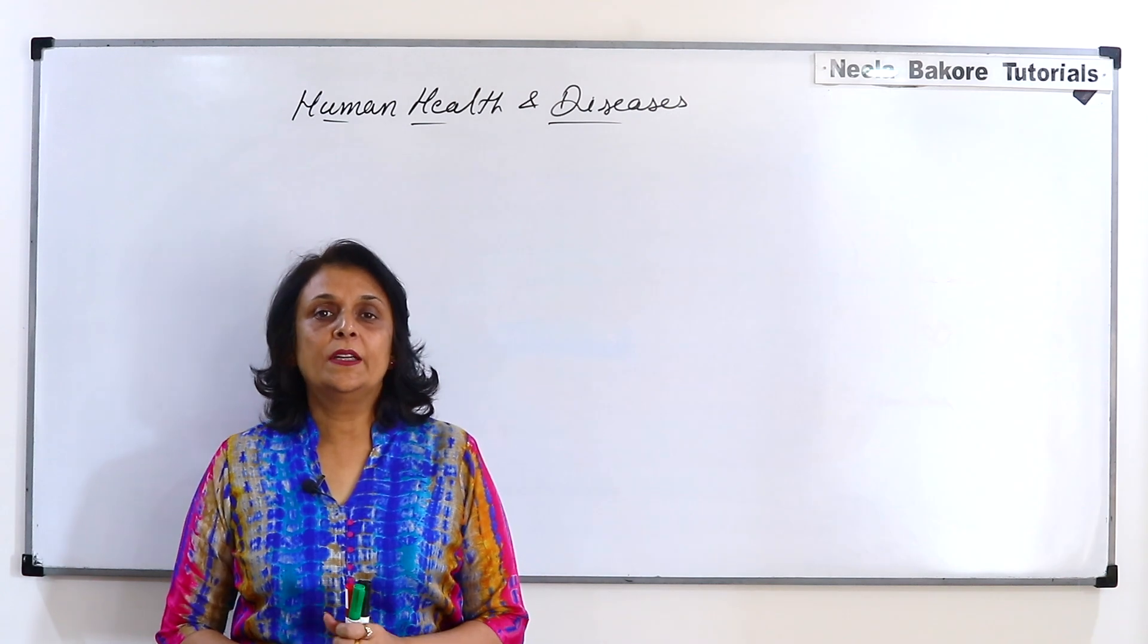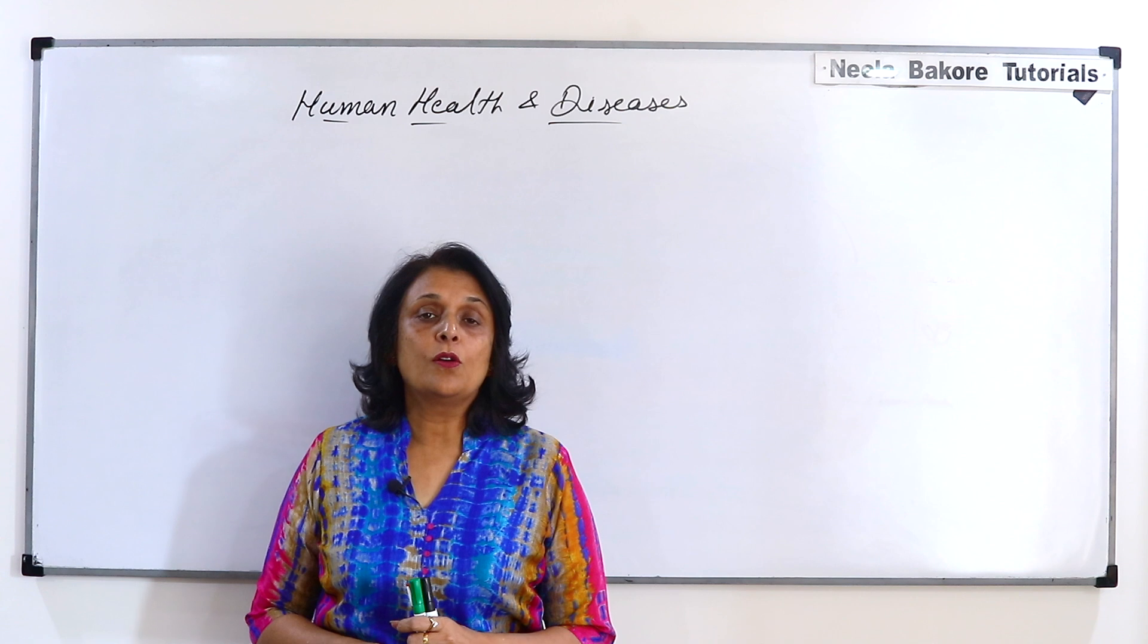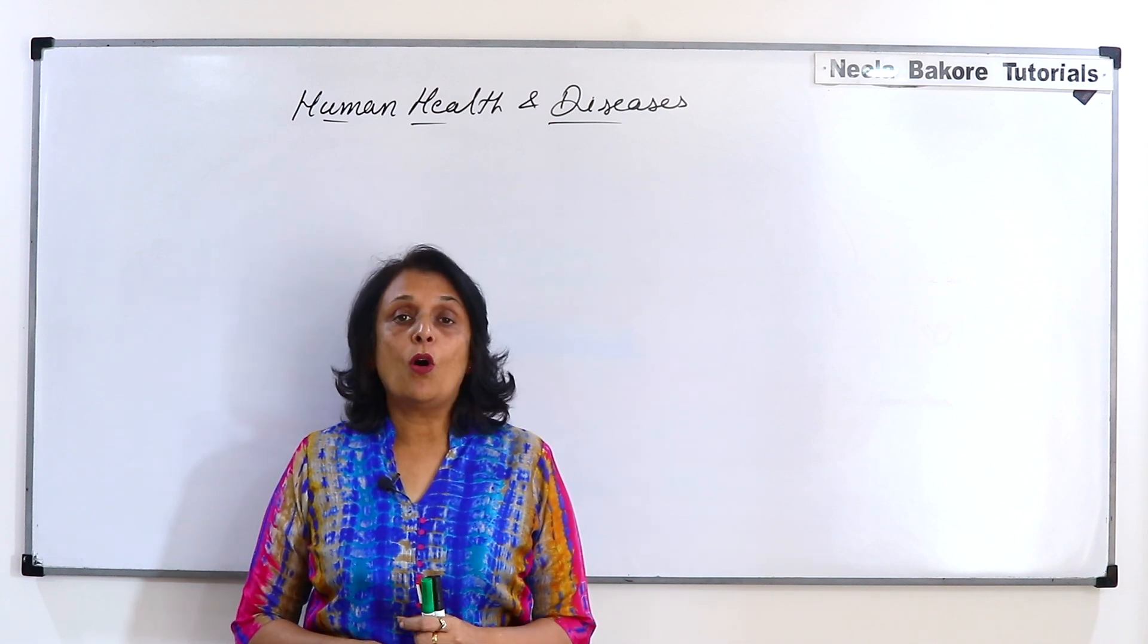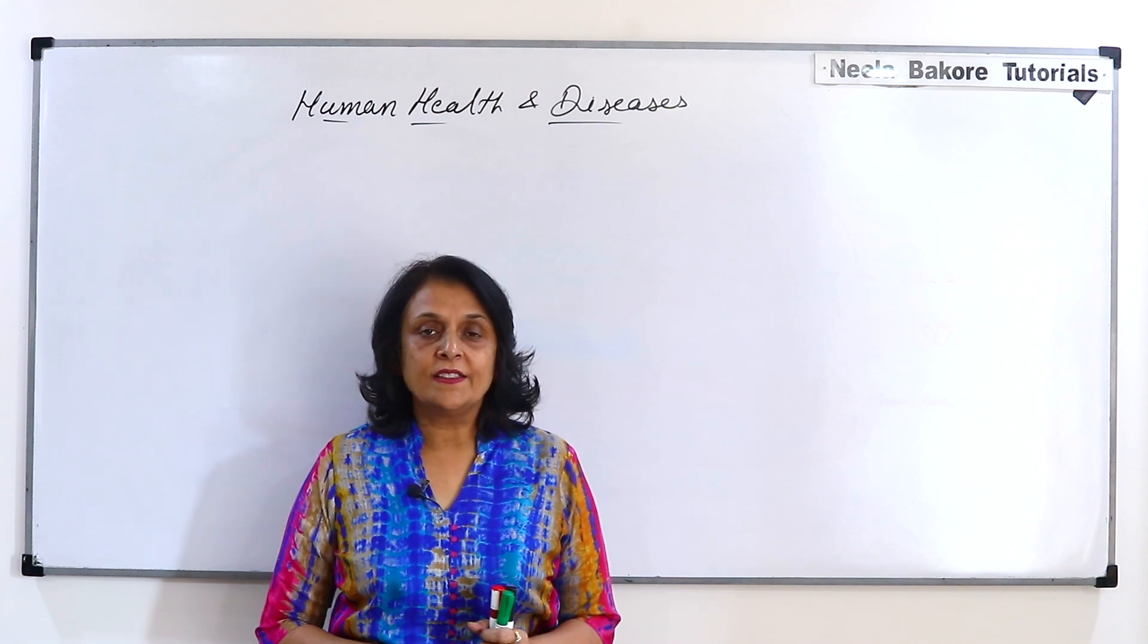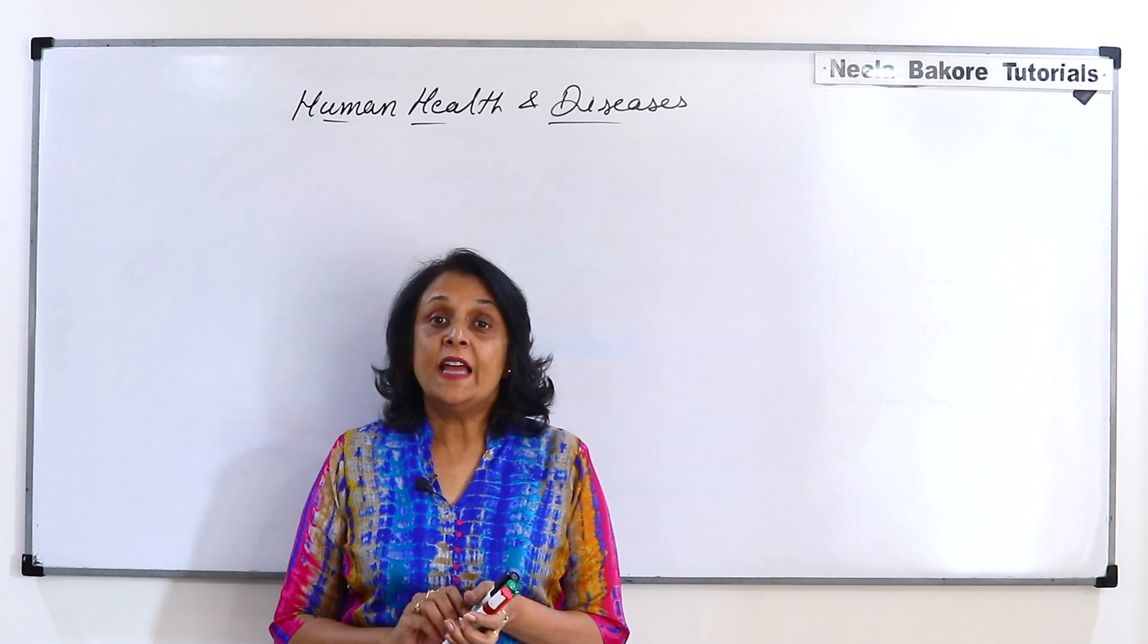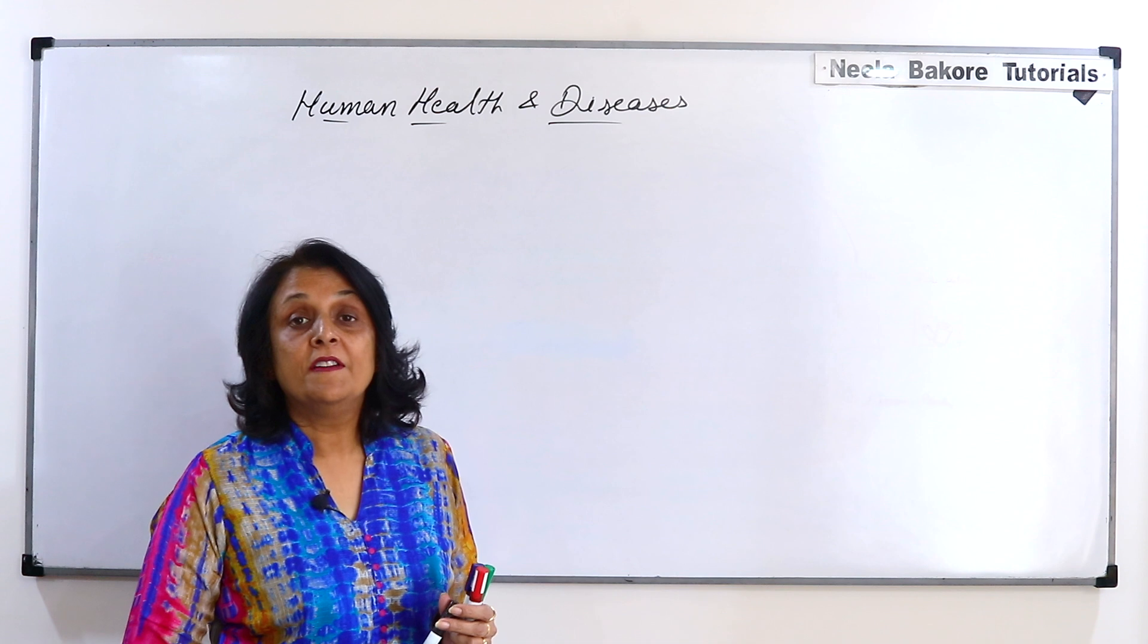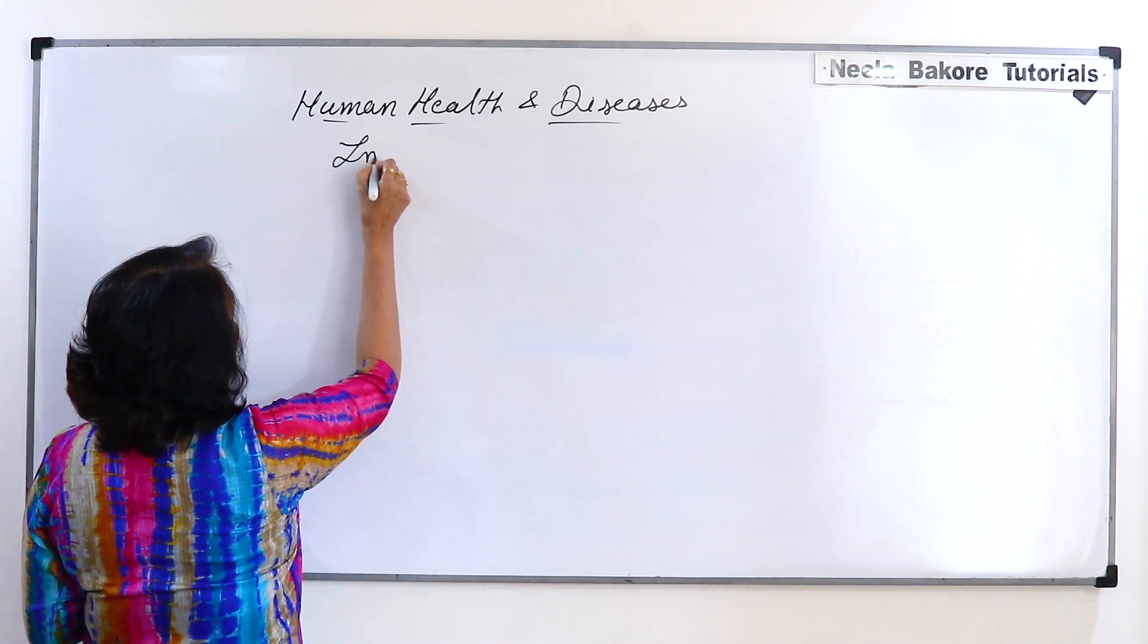In this chapter of human health and diseases so far we talked about all different types of diseases based on the causative agent—bacterial diseases, viral diseases, helminth diseases and so on. Now we will be talking about another very important aspect which is associated with diseases and that is called immunity.